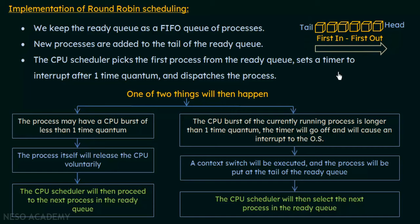That is how the round robin scheduling algorithm is implemented and how it works. In the next lecture, we will discuss how to calculate the average waiting times and average turnaround times for round robin scheduling, and see the factors on which these depend — which is a bit different from the other scheduling algorithms discussed so far.